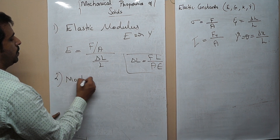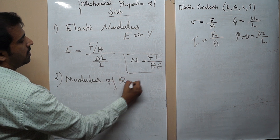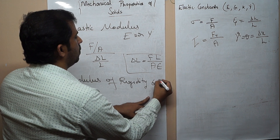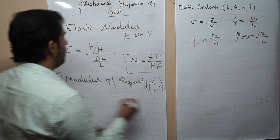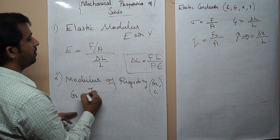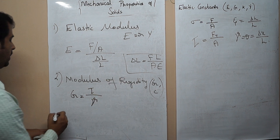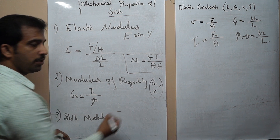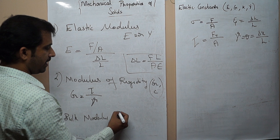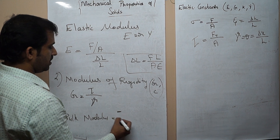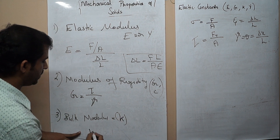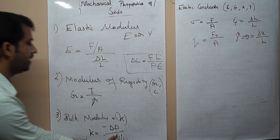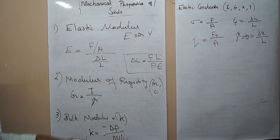The second modulus is the modulus of rigidity, expressed as G or C. It is the ratio of shear stress to shear strain: G equals tau divided by gamma. The third is bulk modulus K, defined as minus delta P divided by (delta V divided by V) — that is, increase of pressure divided by volumetric strain. The negative sign accounts for the volume reducing under pressure.